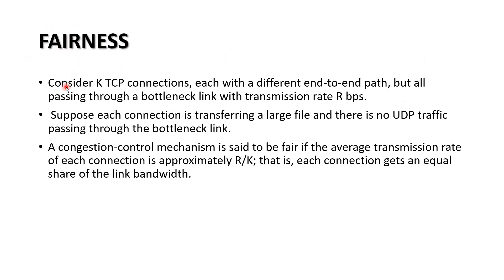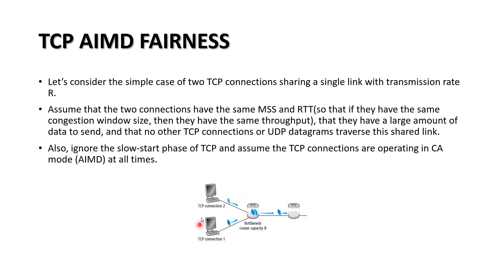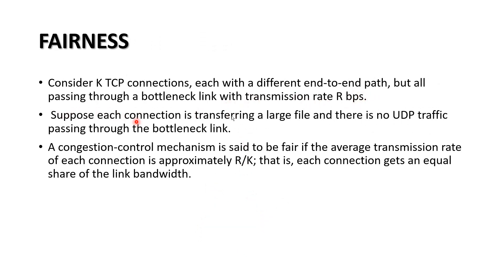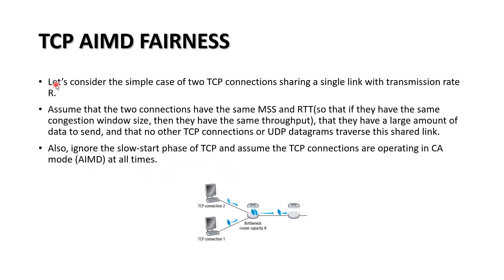What is fairness? Consider K TCP connections, each with a different end-to-end path but all passing through a bottleneck link with transmission rate R bps. Suppose each connection is transferring a large file and there is no UDP traffic. The congestion control mechanism is said to be fair if the average transmission rate of each connection is approximately R divided by K — that is, equal share for each TCP connection.